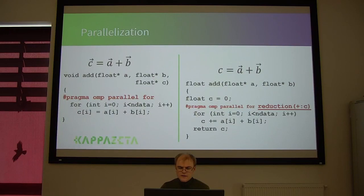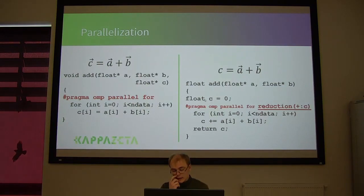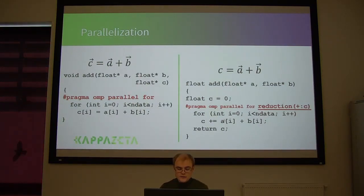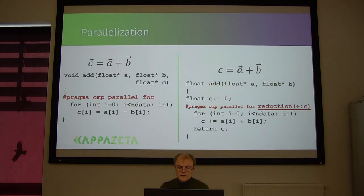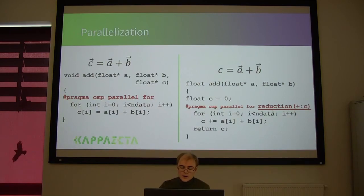Things are a little more complicated if we don't want to store the result in a vector but in one scalar. In that case, we have to take care that different processors don't disturb each other. So we have to split this accumulator parameter between the cores. But it can, again, quite easily be done by just adding one element to the pragma line.